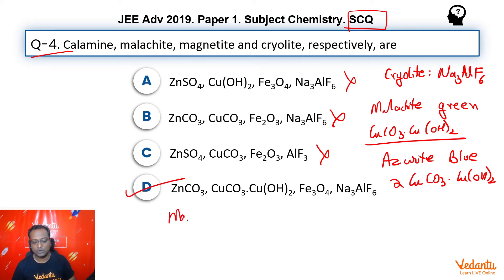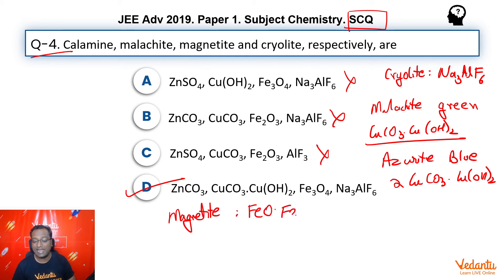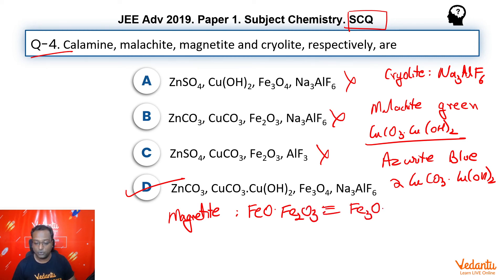Let's also discuss the other ores. Magnetite is a mixed oxide of iron — FeO and Fe₂O₃ — thereby giving it the formula Fe₃O₄.